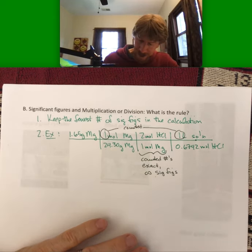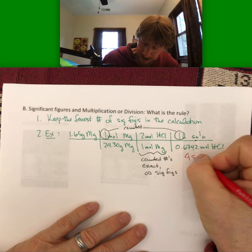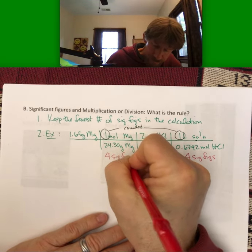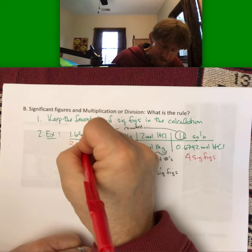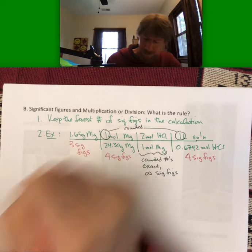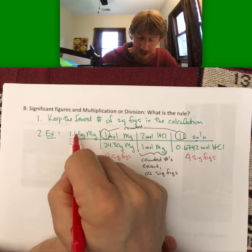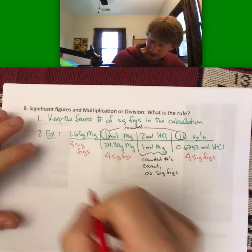So we have four sig figs for this number. These are measured numbers - four sig figs and three sig figs. The smallest number of sig figs in our calculation is three, so our answer will have three sig figs.